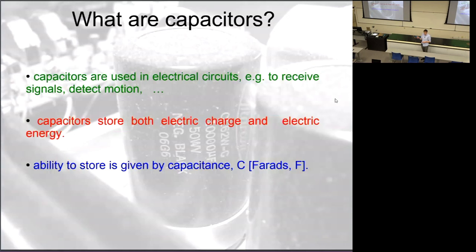The degree to which a capacitor can store charge and energy is characterized by a quantity called capacitance, symbol C, measured in units called farads, symbol F. The capacitance C in farads tells us how able a capacitor — a neuron, a thundercloud, a capacitor in an iPhone — is to store charge and energy.